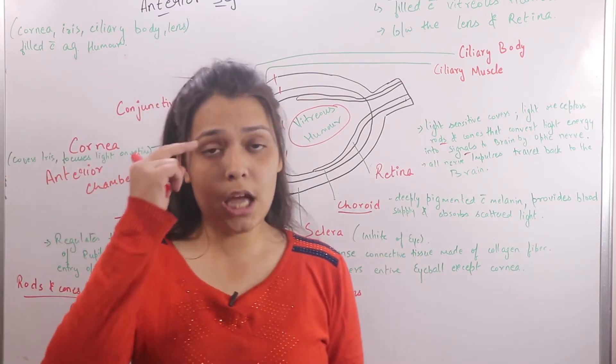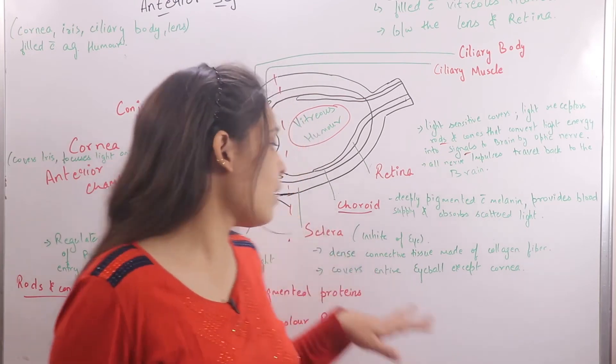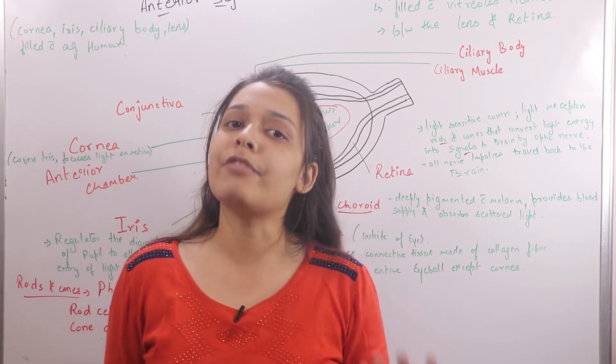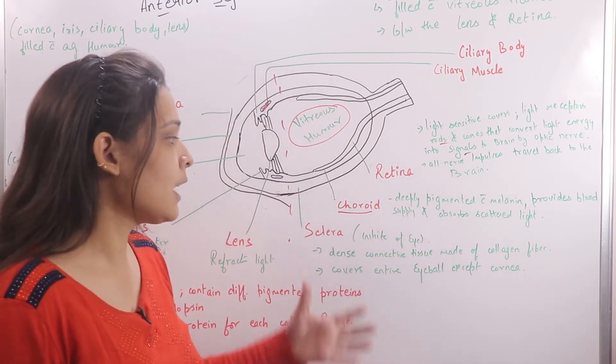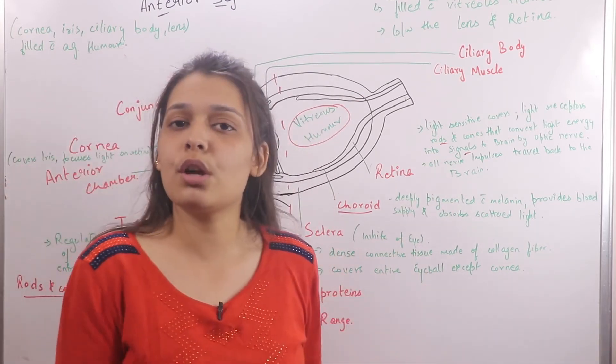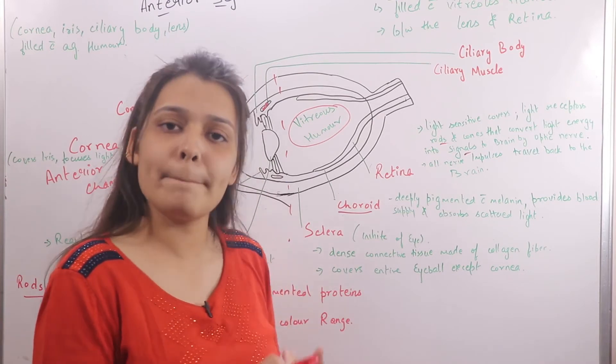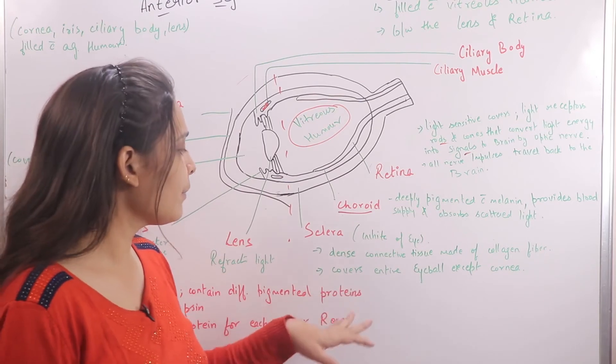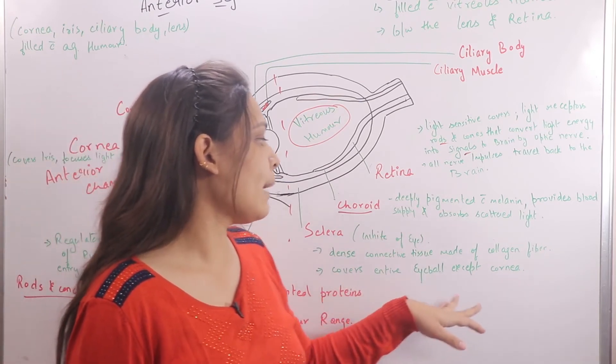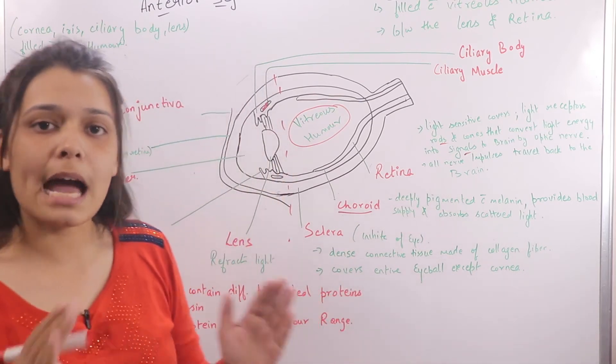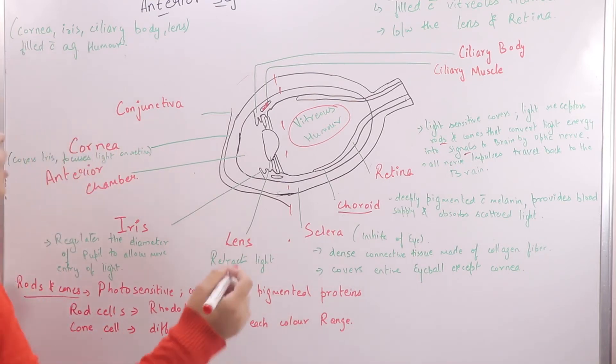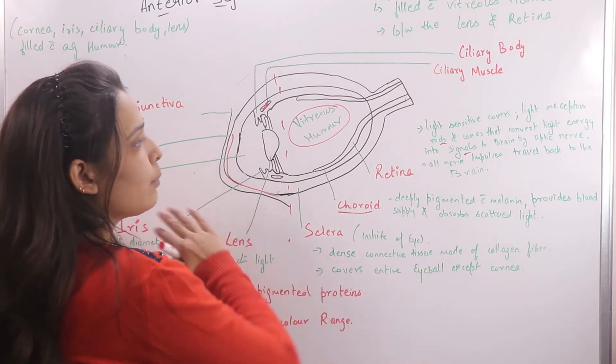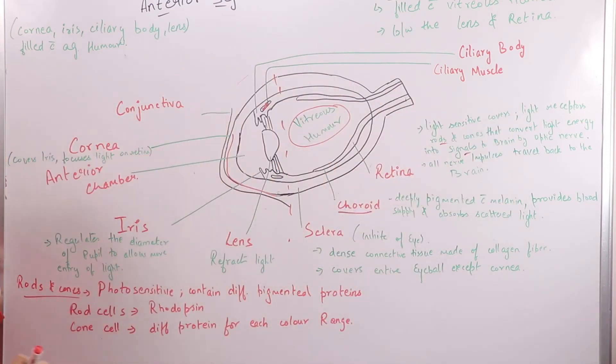The sclera is the white of the eye. It is a dense connective tissue made up of collagen fibers and fibroblasts. It covers most of the human eye, covering the entire eyeball except the cornea, which is the front portion of the eye.